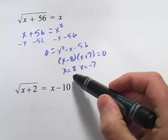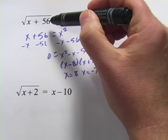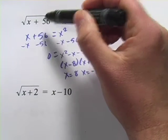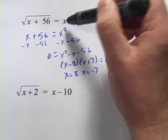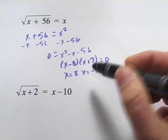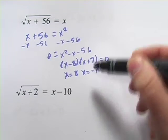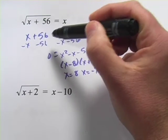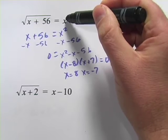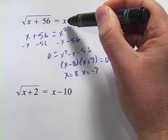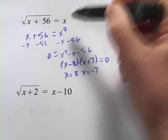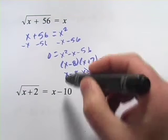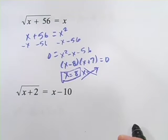Now if you plug 8 back in up here, 8 plus 56 would be 64. The square root of that is 8. And then you plug it in for this x as well, you get 8 equals 8. So that works. But if you plug a negative 7 up here, well, I'm not even going to do the arithmetic on the left here because I would be putting a negative 7 in right here as well. And there's nothing you can take the square root of that's going to equal a negative 7. So that is not a solution. And our only solution is x equals 8.